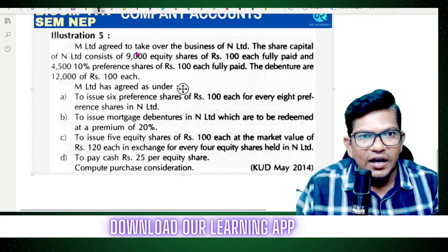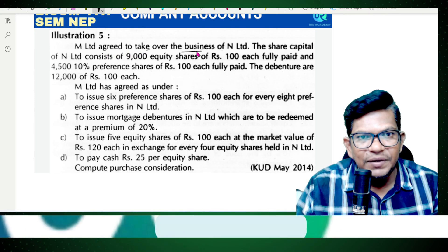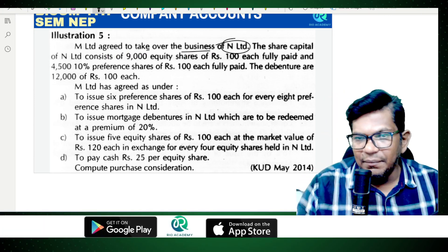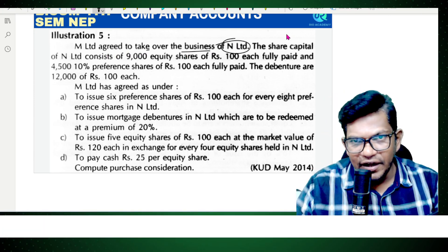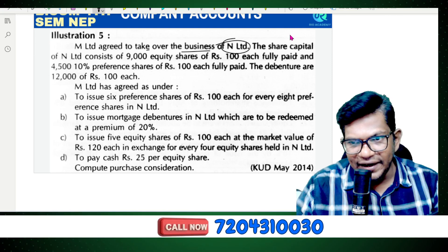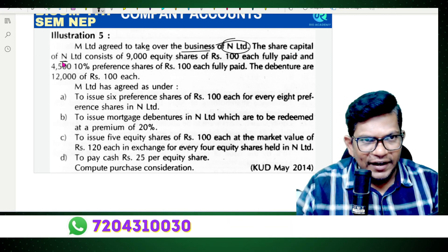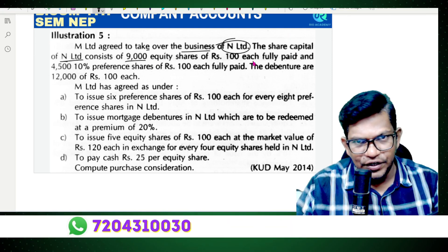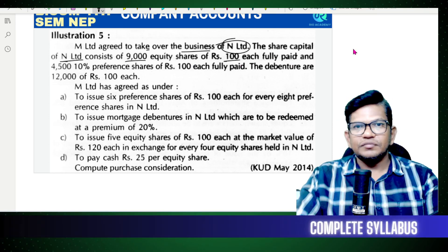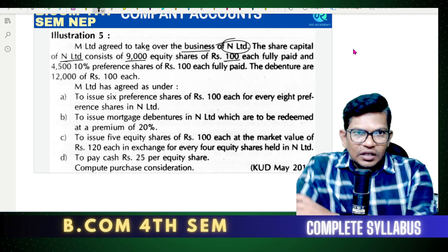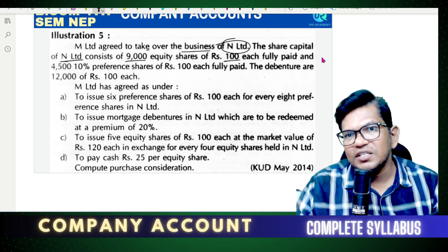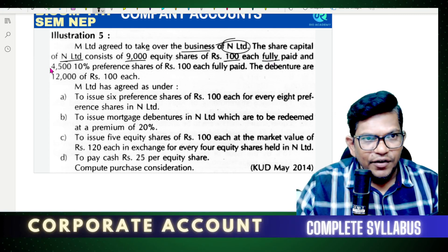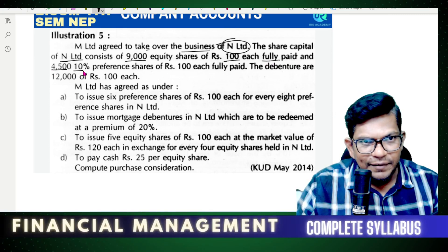M Limited agrees to take over the business of Unlimited. The share capital of Unlimited consists of 9,000 equity shares of 100 each, fully paid up, and 4,500 ten percent preference shares of 100 each.